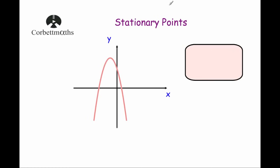Stationary points are sometimes called turning points — they're points on the graph where the graph turns. This parabola has got a turning point or stationary point at the top, and this would be a maximum. The reason it's a maximum is because the gradient is positive to begin with, at this particular point the gradient is zero, so dy/dx is equal to zero, and then the gradient is negative.